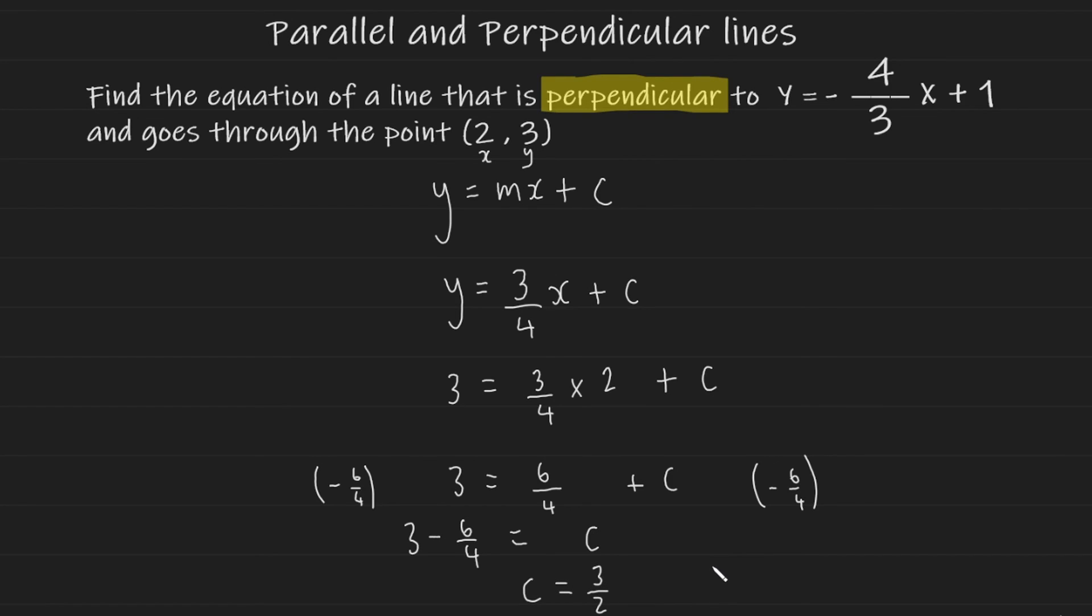And now we can write our full equation, which I'm just going to write down here. Y is equal to 3 over 4x plus 3 over 2. And there you have it. This is the equation of the line that is perpendicular to the equation of the line they've given us here that goes through the point (2, 3).